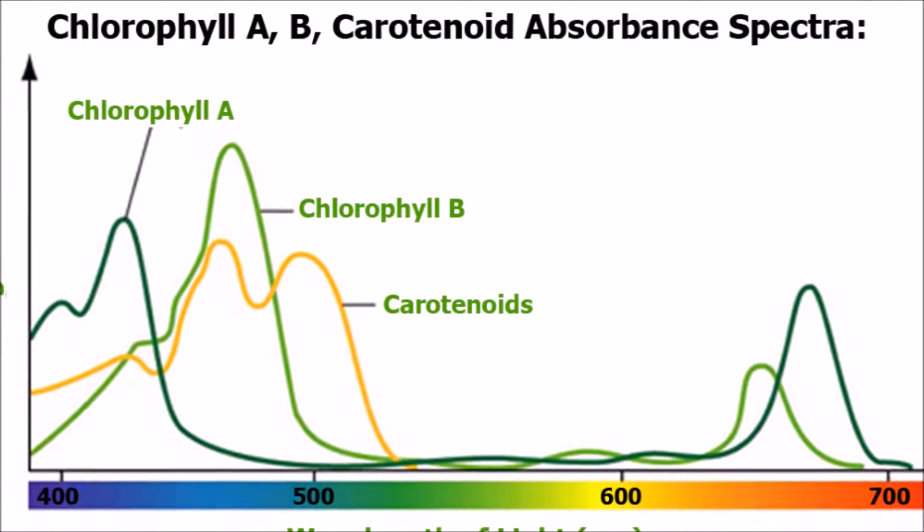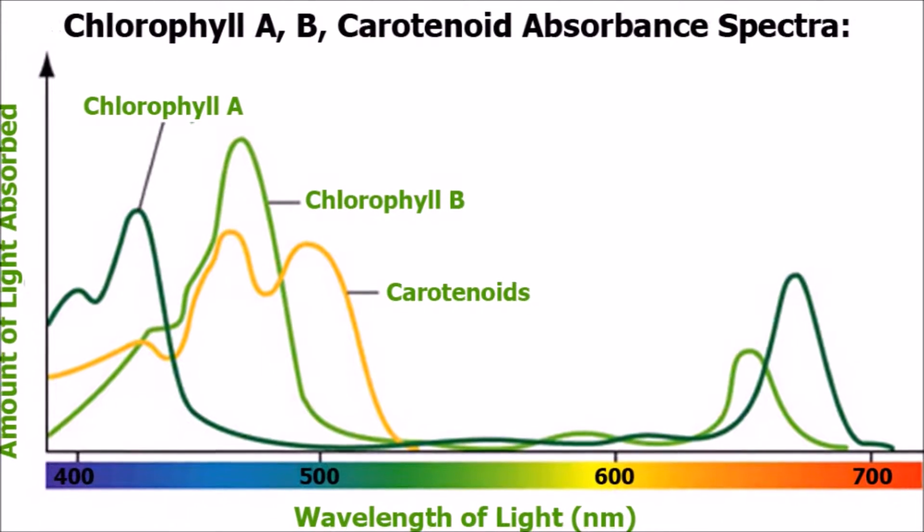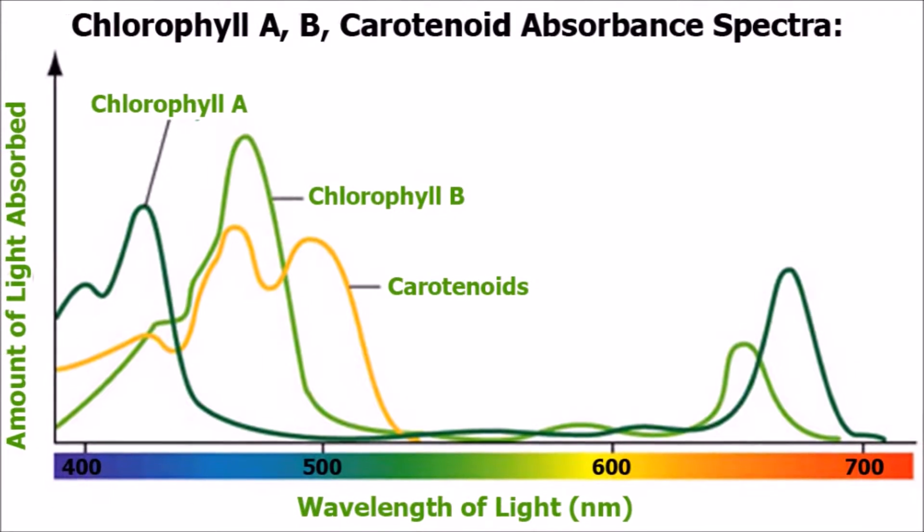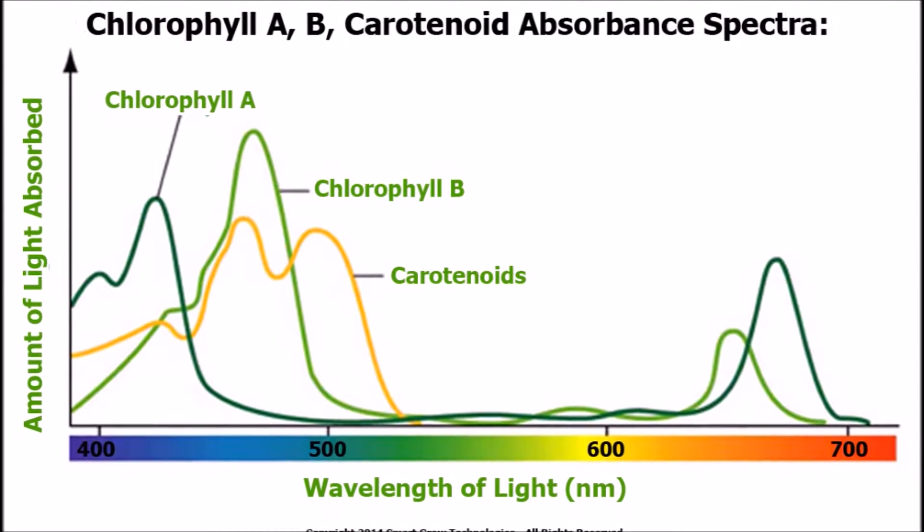But despite leaves being green, accessory pigments called carotenoids are responsible for various autumn colors. They absorb light within the blue, green, and violet regions, and thus reflect primarily orange, yellow, and red. The color of a carrot is due to a type of carotenoid called carotene, which is also responsible for a variety of other fruit and vegetable colors.